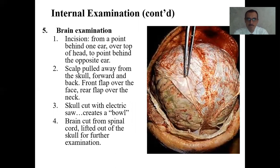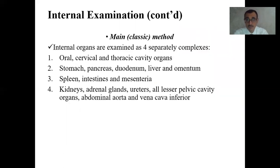For examination of the brain, the incision starts from a point behind one ear over the top of the head to a point behind the opposite ear. The scalp is peeled away from the skull forward and back — the front flap over the face, the rear flap over the neck. The skull is cut with an electric saw to create a bone cap. The brain is cut from the spinal cord and the skull lifted out for further examination. The main classic method examines internal organs as four separate complexes: first, the oral, cervical, and thoracic cavity organs; second, stomach, pancreas, duodenum, liver, and omentum; third, spleen, intestines, and mesentery; fourth, kidneys, adrenal glands, ureters, all lesser pelvic cavity organs, abdominal aorta, and vena cava inferior.